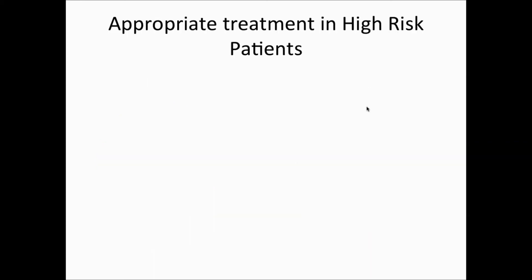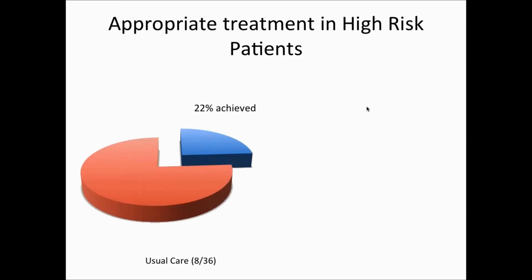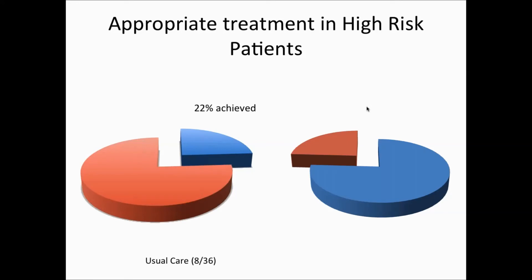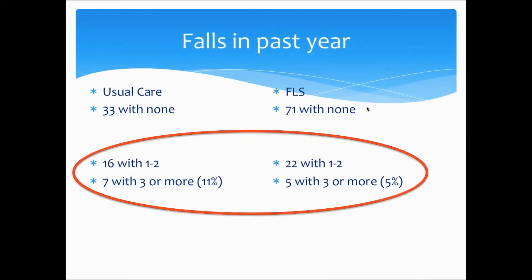In terms of risk of future fracture, most of our patients were high risk, a little bit more in our usual care group. When we looked at appropriate treatment in high-risk patients, in our usual care group only 22% achieved appropriate treatment — which is typical for what we see when we don't intervene in any way. But in our FLS program it was the opposite: 76% of patients achieved appropriate treatment in our high-risk patient population. So it was really, really successful in a short period of time.